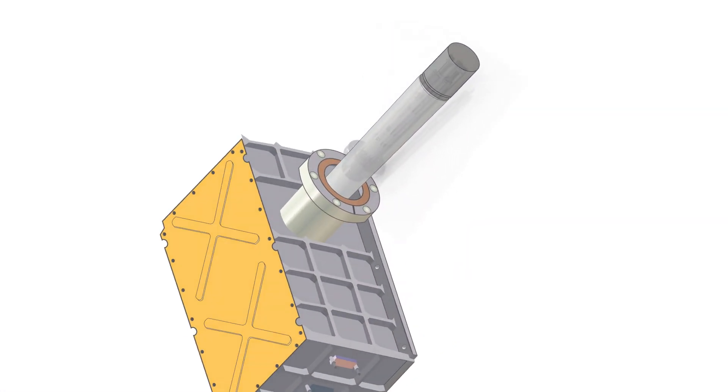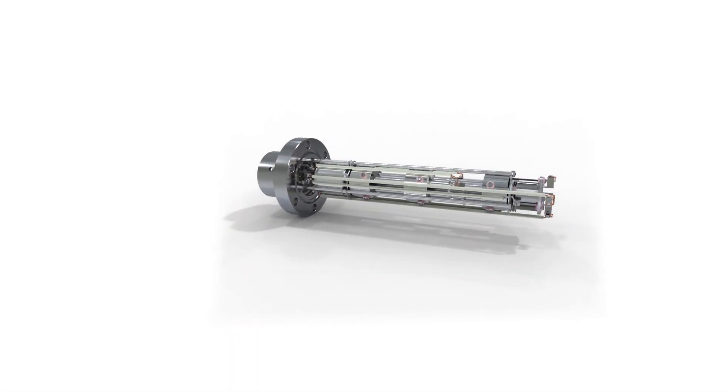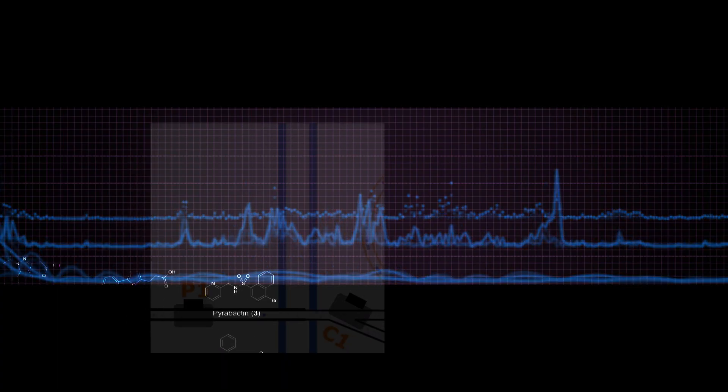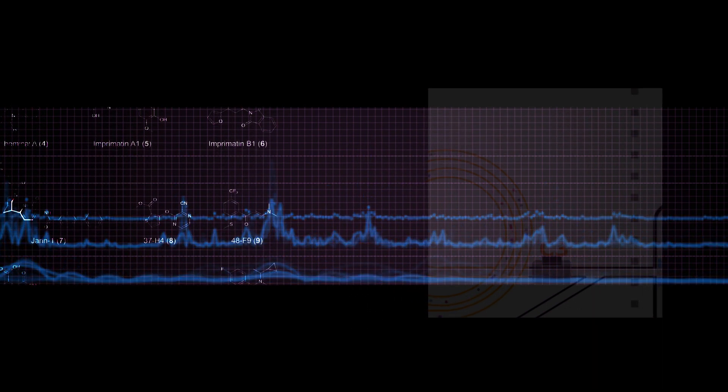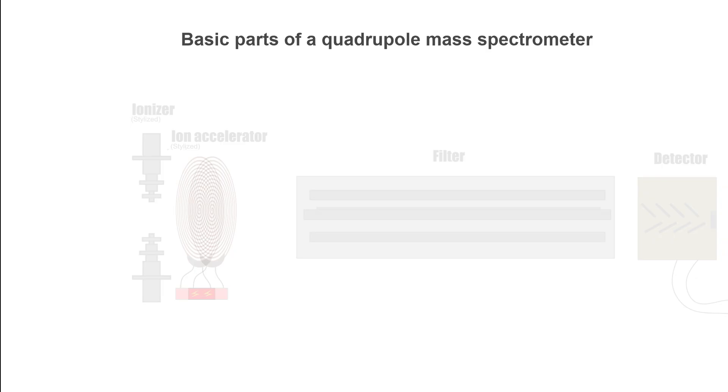With the basic concept of the mass spectrometer explained, let's now look at the specific type used in CHACE, the quadrupole mass spectrometer. The operational concept of a quadrupole mass spectrometer is fairly simple. An unknown substance is fed into an ionizer. This ionizes the atoms and molecules of the substance, making them electrically charged.